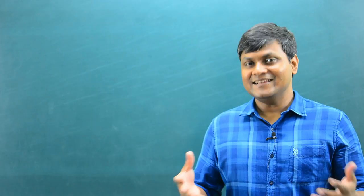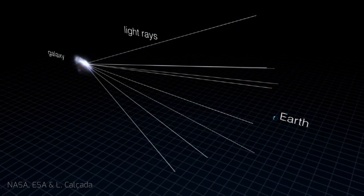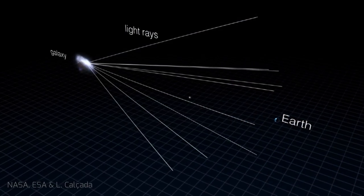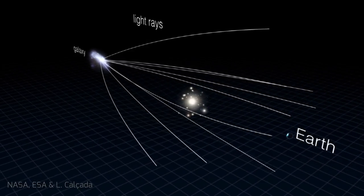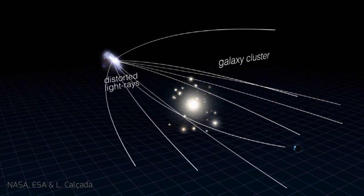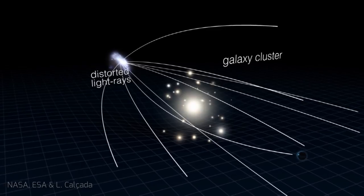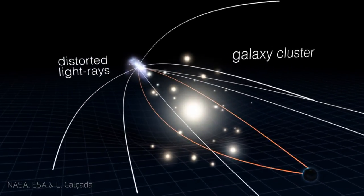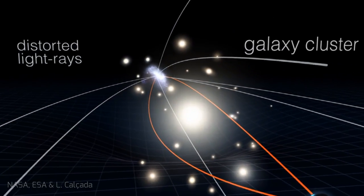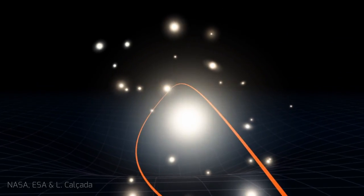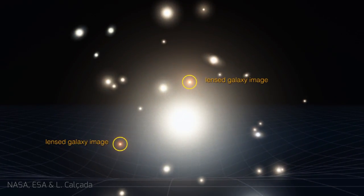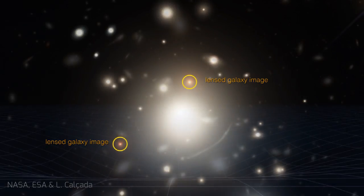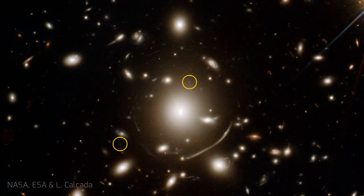This brings us to gravitational lenses. Gravitational lenses are massive objects like galaxies or clusters of galaxies which bend the light coming from distant objects like stars or quasars to the earth. Because of this bending, we see very interesting images of distant cosmic objects — sometimes multiple images of the same object, sometimes distorted images of distant galaxies or stars.